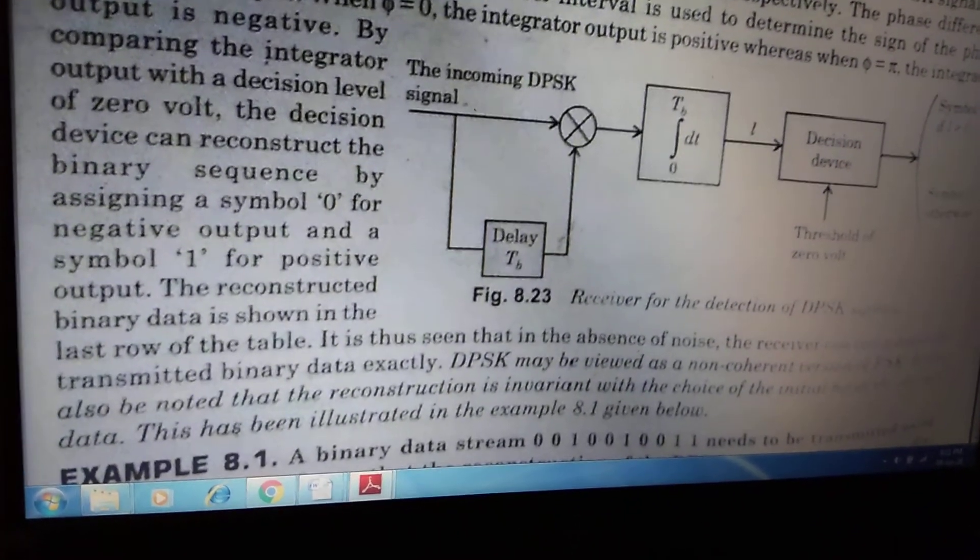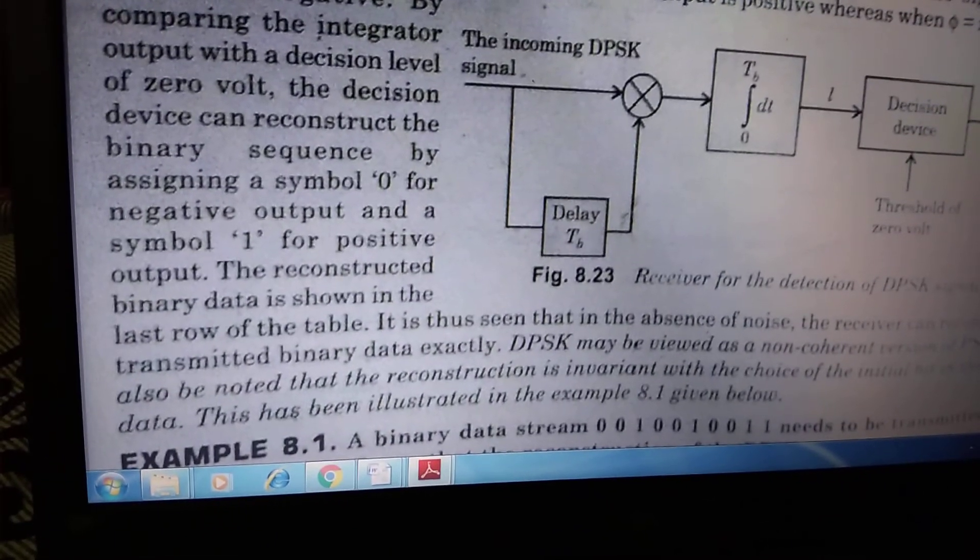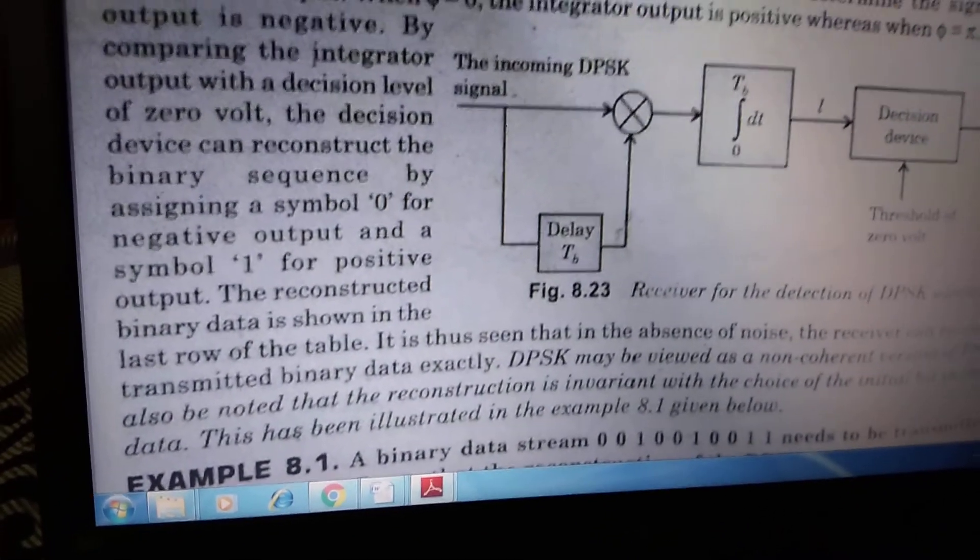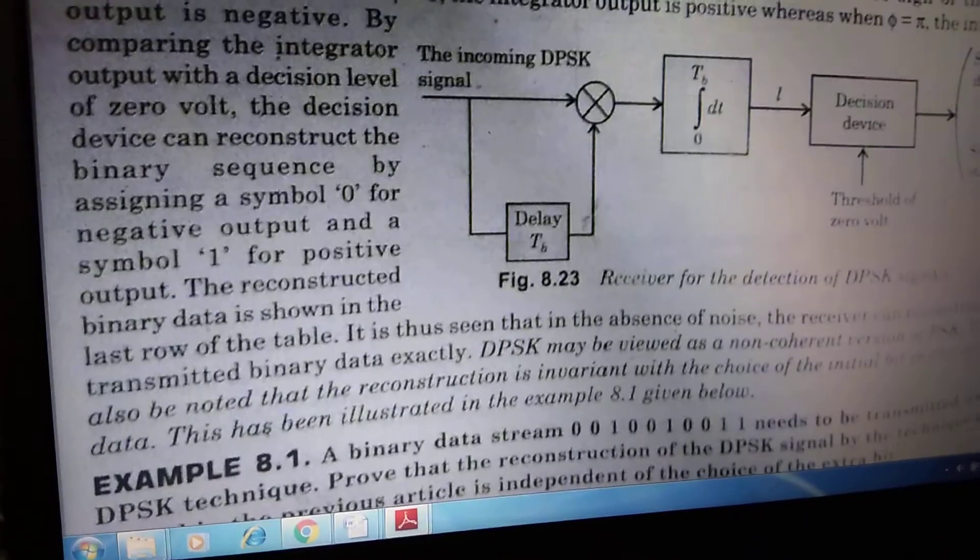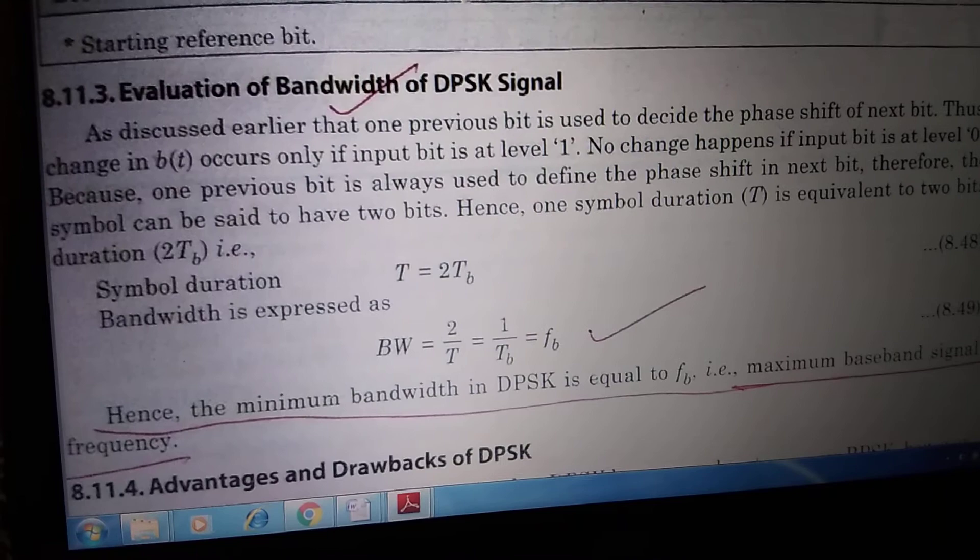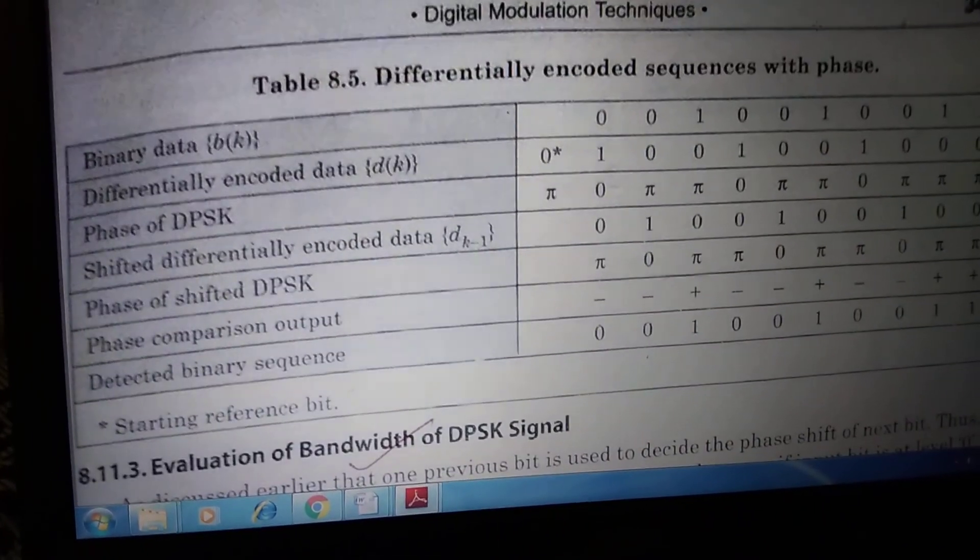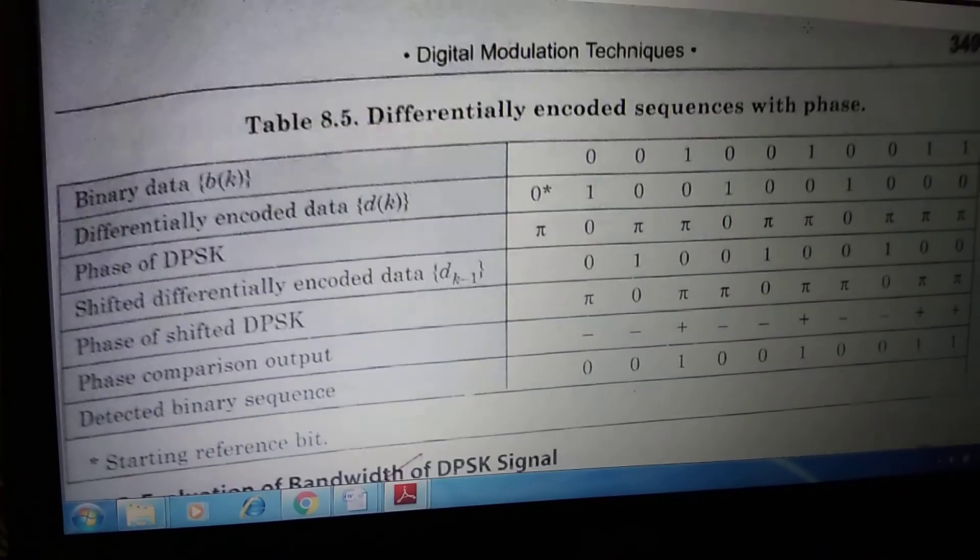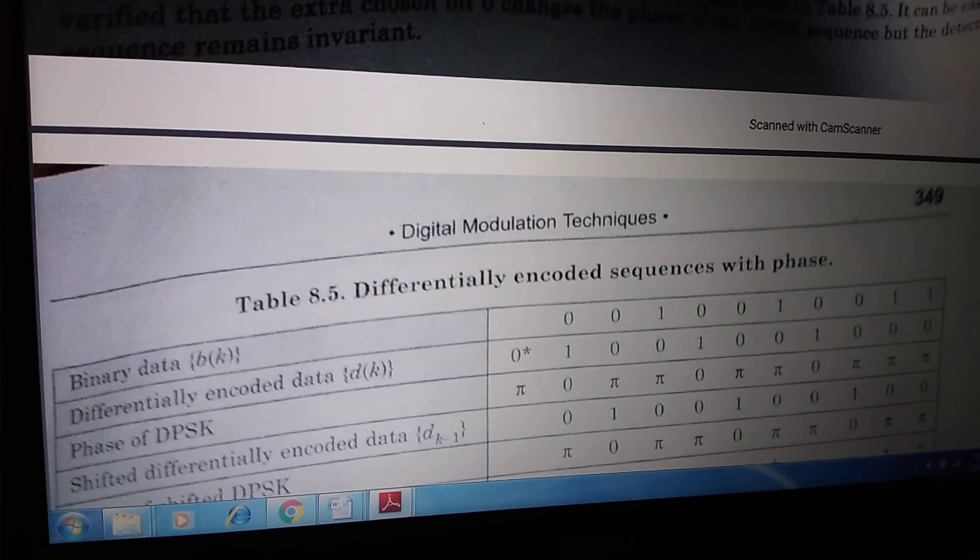That's all for today. That is the part of the receiver circuit of the DPSK. Next class, we will see, we will take one example. And after that, we will calculate the bandwidth of the DPSK, and we will see the difference between the DPSK and the BPSK. That's all for today. Thank you all.